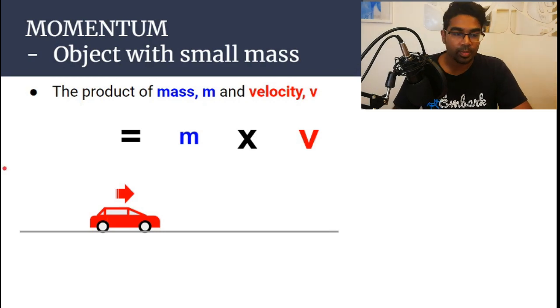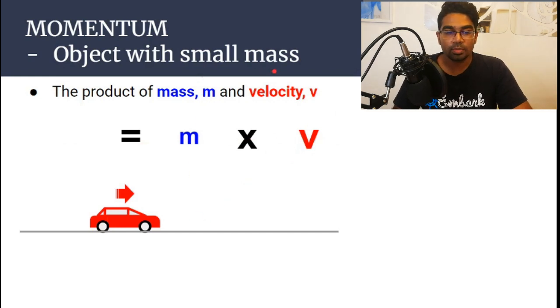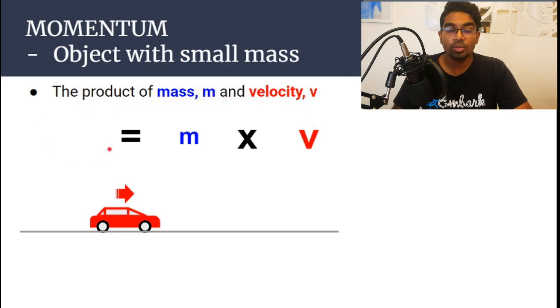Let's look at how momentum varies with mass. So, given that the velocity is constant, the velocity doesn't change, let's say we're dealing with an object with a small mass. So, a small car, for example. The product of the small mass with the velocity would give us a small momentum.